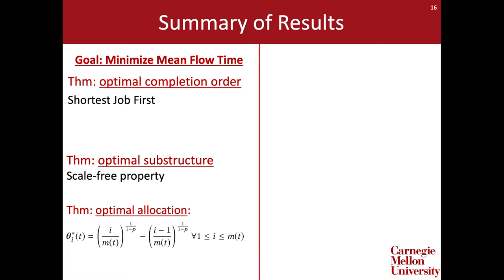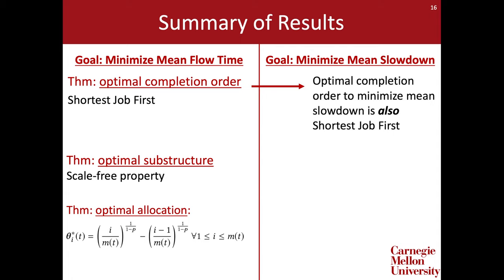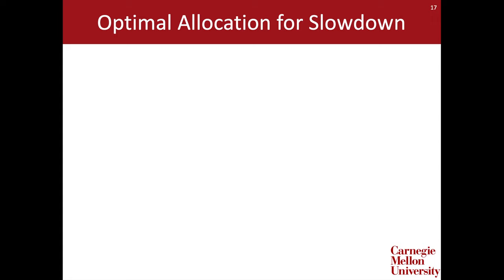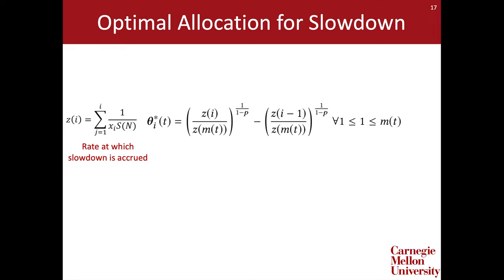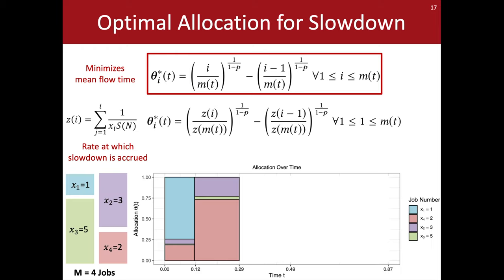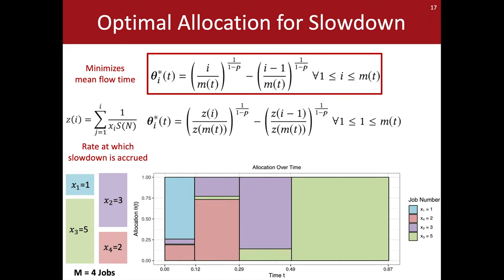Recall that we also had the dual goal of minimizing mean slowdown. We can show that the optimal completion order for minimizing mean slowdown is also shortest job first, and that the scale-free property holds in this case as well. Hence, all that remains is to derive a new optimal allocation using our scale-free constants and a slightly different objective function. The optimal allocation for slowdown has a new term z_i, which represents the rate at which slowdown is accrued in our system. Note that this is very similar to the form of the optimal allocation for mean flow time — jobs are finished in shortest job first order and the scale-free property is obeyed, but in the case of minimizing slowdown we bias more heavily towards short jobs.